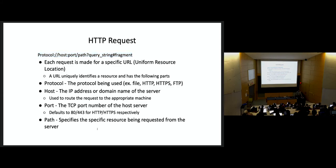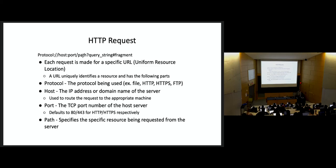Next is path — this is the specific resource that's being requested. For your homework, the first one is /hello, meaning 'I want to request the hello path,' then you get your hello world message. If path is blank, we call that the root path or just slash. That typically means 'give me index.html — give me your root HTML page.' Path is something you'll have to code quite a bit. Your server is going to look like: if this path do this, else if this path do this, else if this path do this, etc.